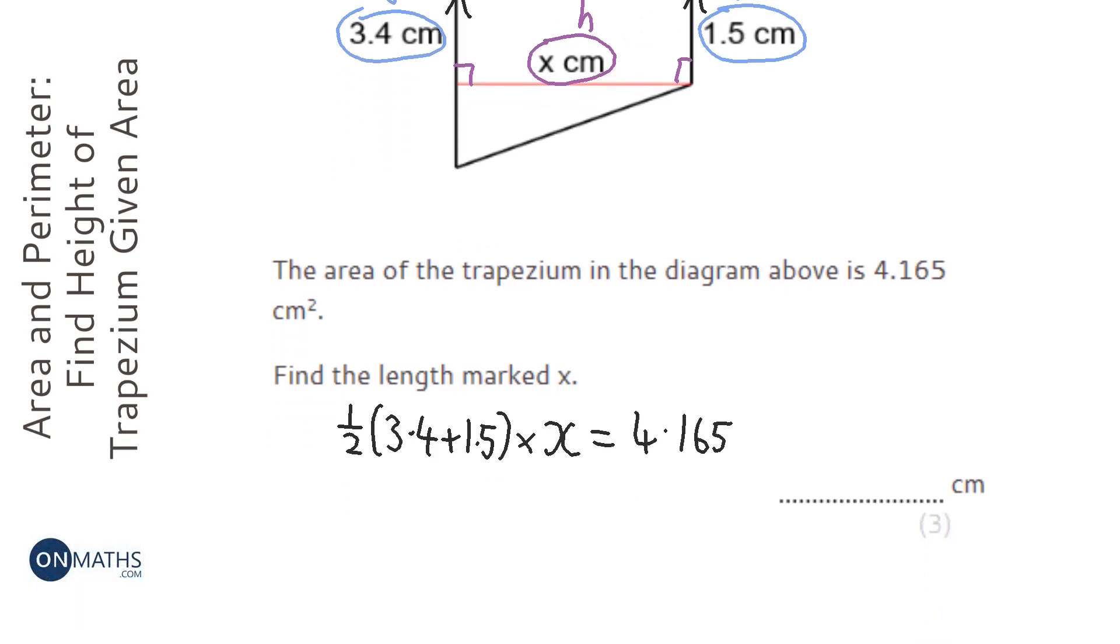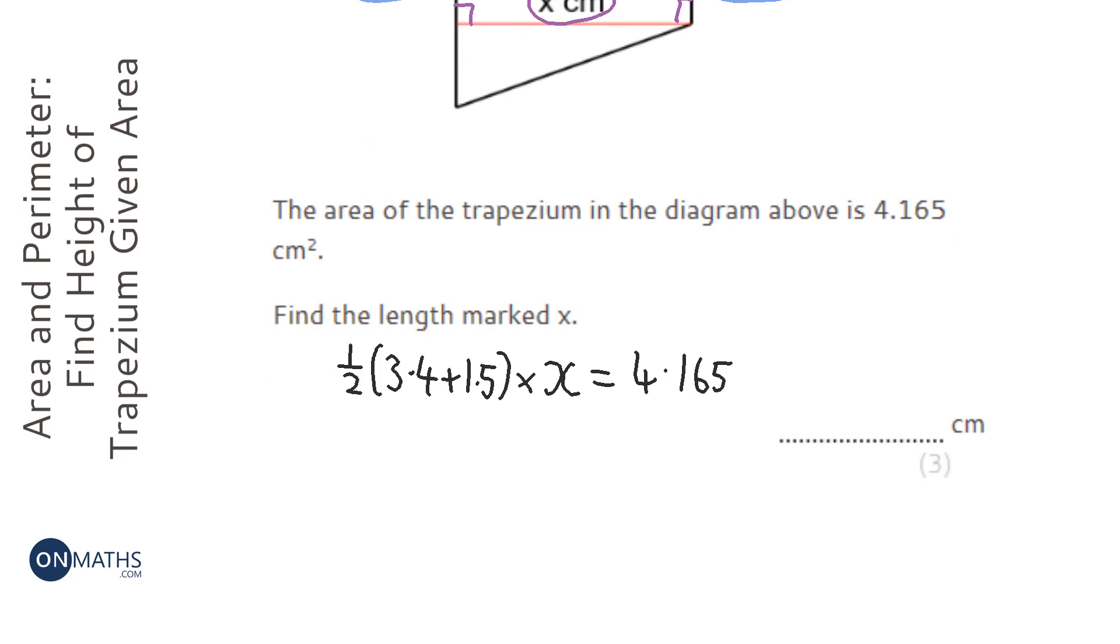So I'm just going to tidy up the left-hand side a little bit. I'm going to do 0.5 times brackets 3.4 plus 1.5, and let's work out what that is—that is 2.45 times x equals 4.165.